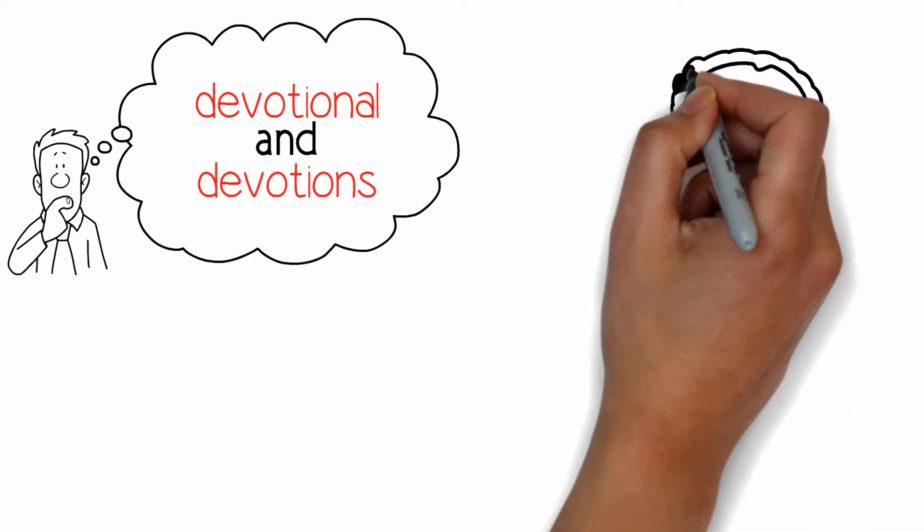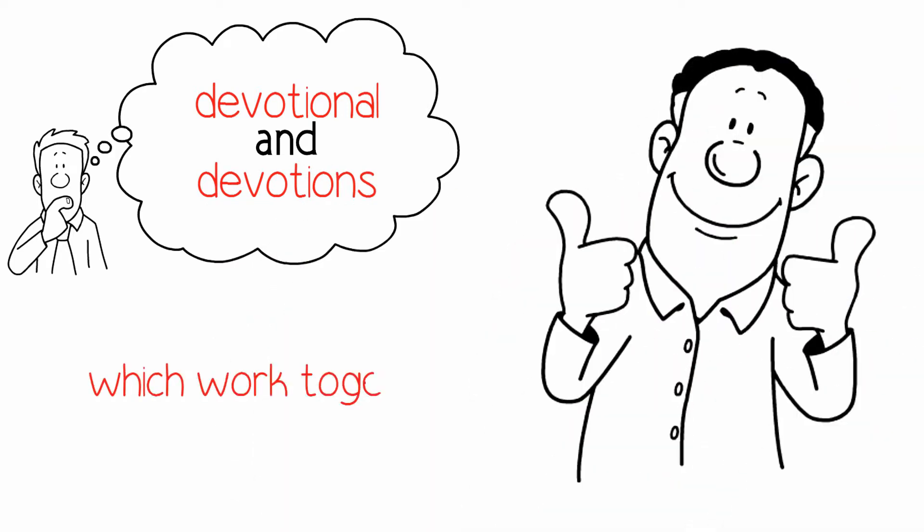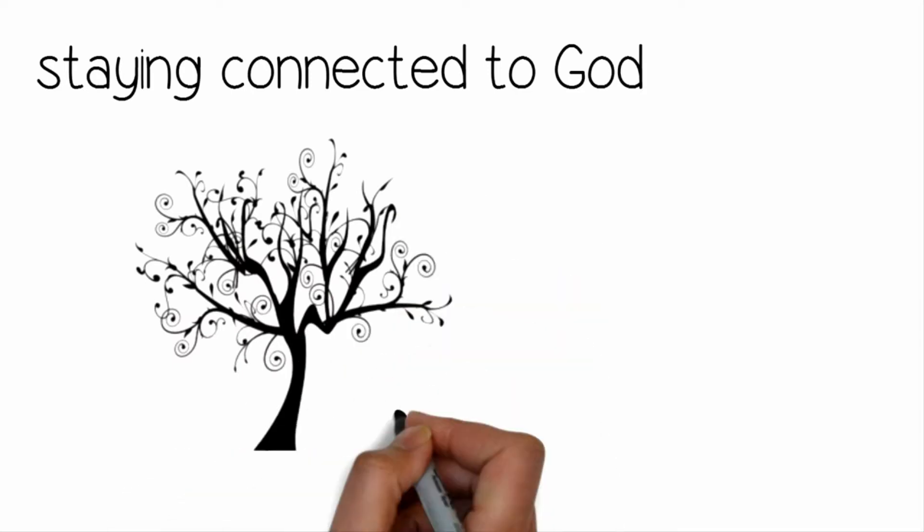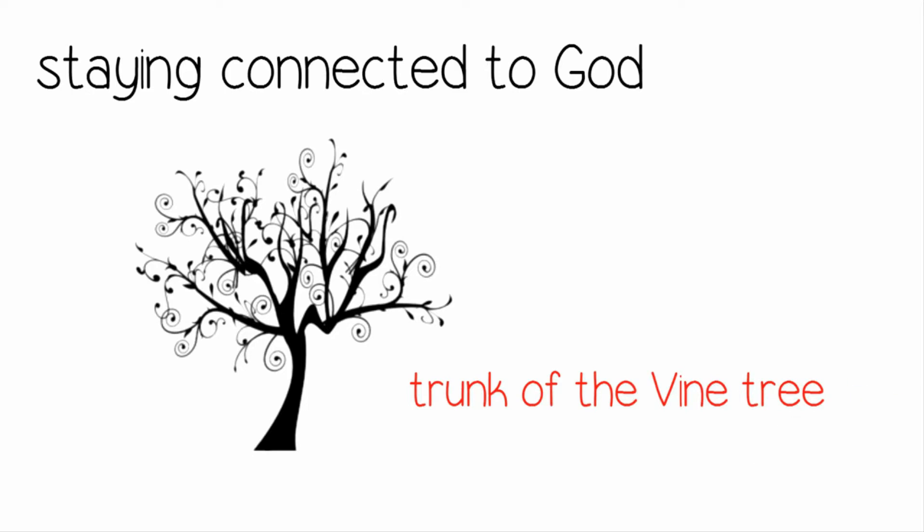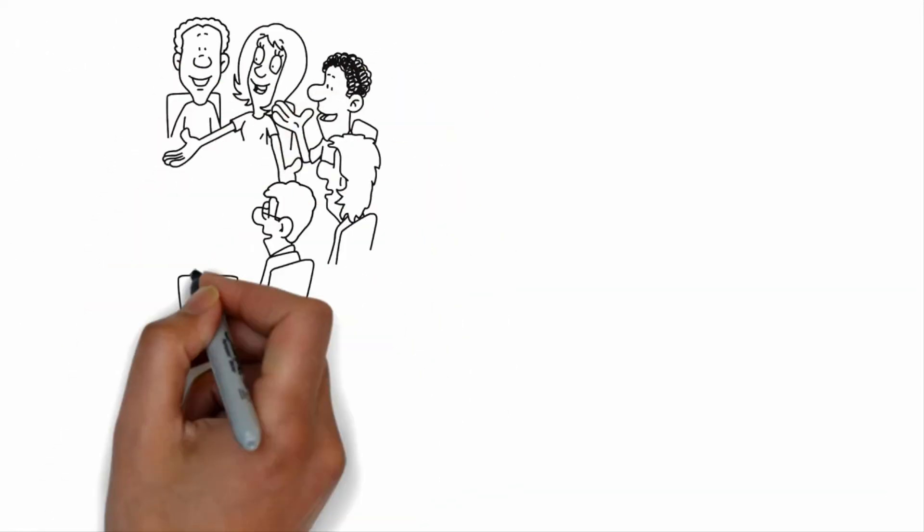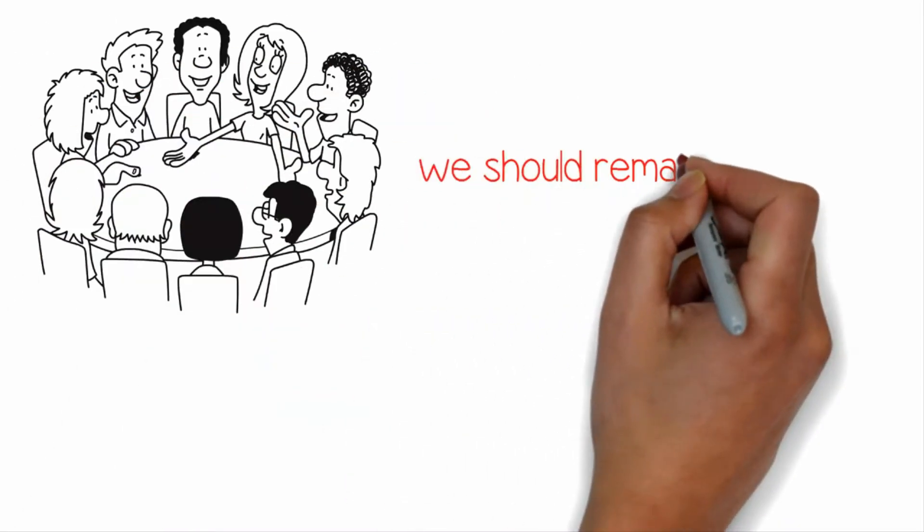There are two ideas that will help elucidate this concept which work together. The first is staying connected to God to draw life from Him constantly as a branch that draws its life from the trunk of the vine tree. If we want to stay full of life and bear fruits, we should remain connected.